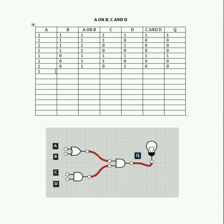A ON, B OFF, C OFF, D OFF. A or B: 1 or 0 is 1. C and D: 0 and 0 gives us 0. That gives us 0 as the output, of course.